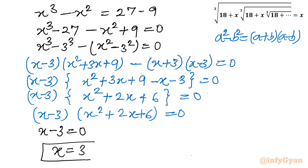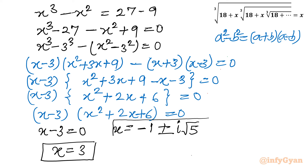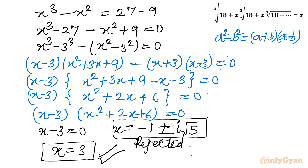x equals 3 is the only real solution. The quadratic x squared plus 2x plus 6 yields complex roots negative 1 plus or minus i root 5, which we reject as complex values. So the accepted solution is x equals 3. I hope this video was meaningful to you. Do not forget to like, share, and subscribe. Bye bye till next video. Good luck and take care friends.